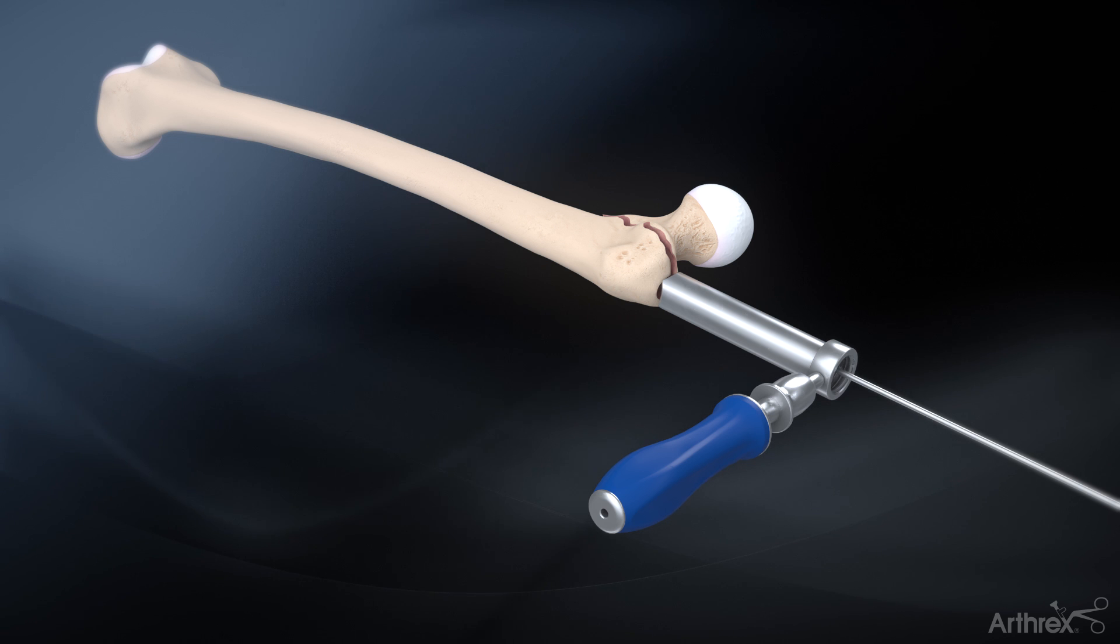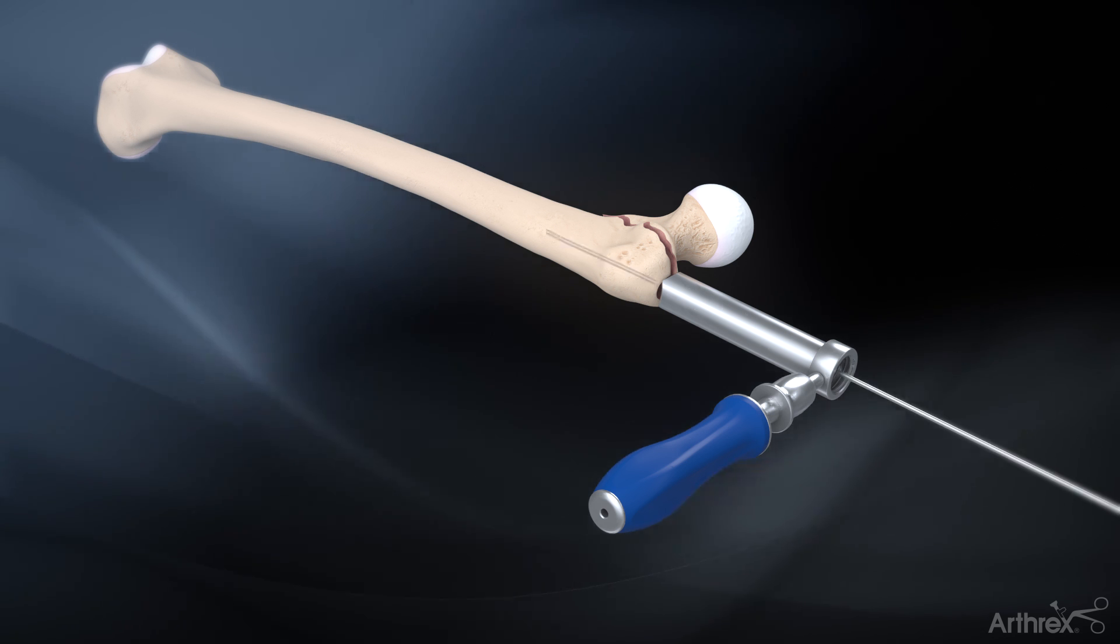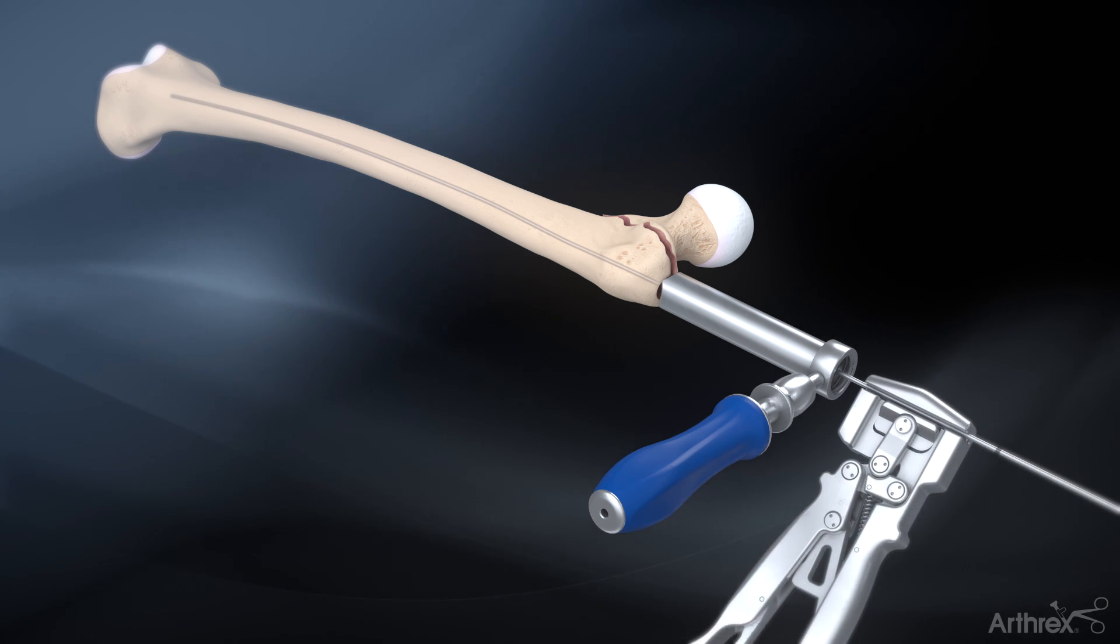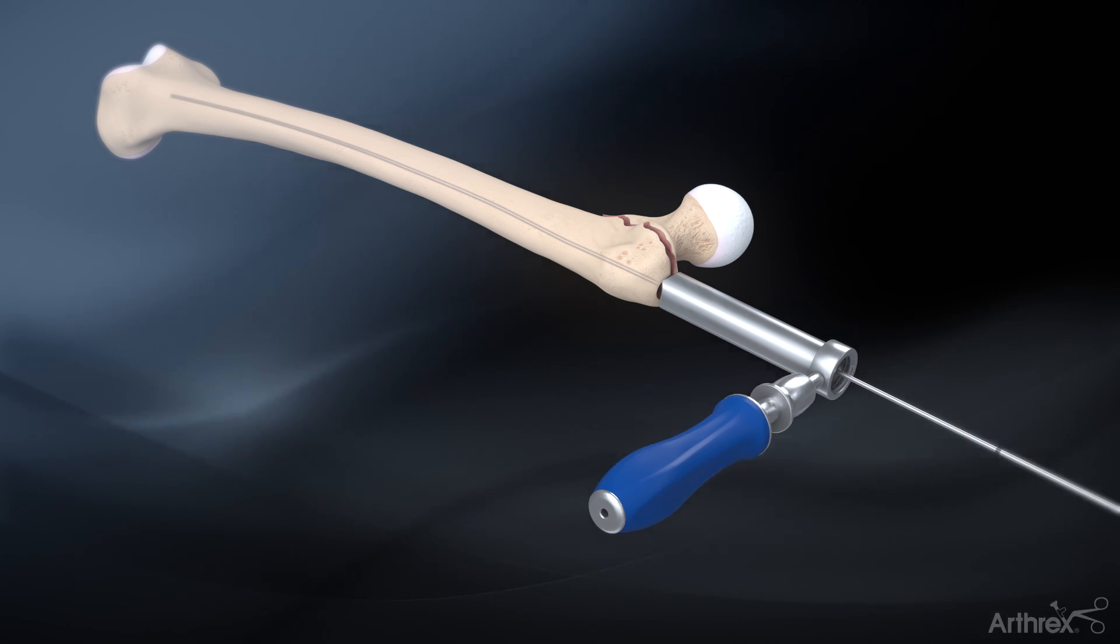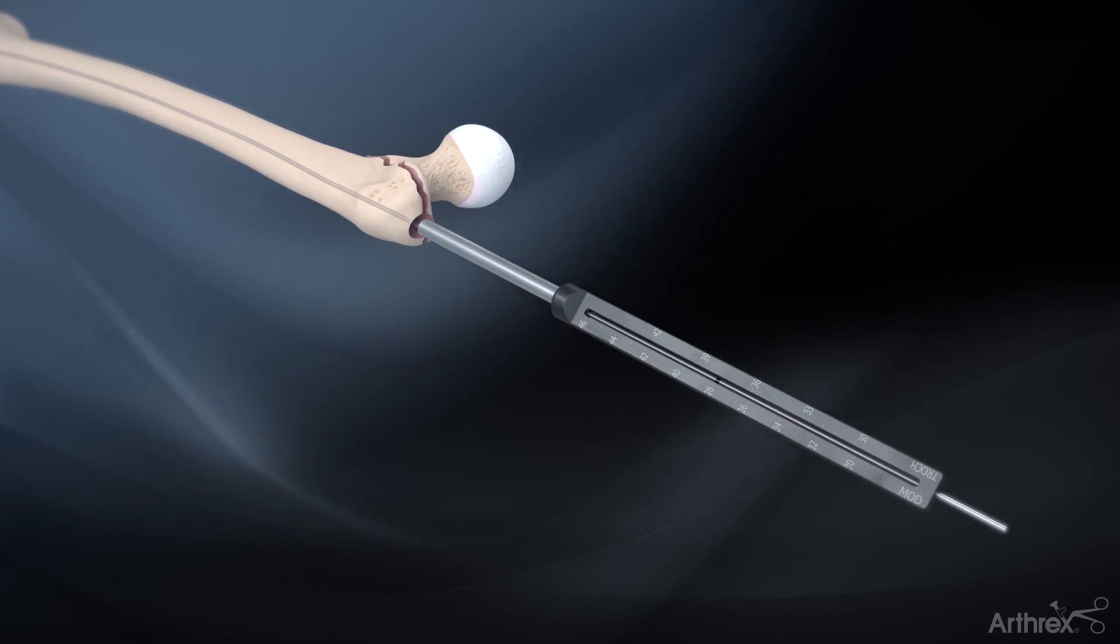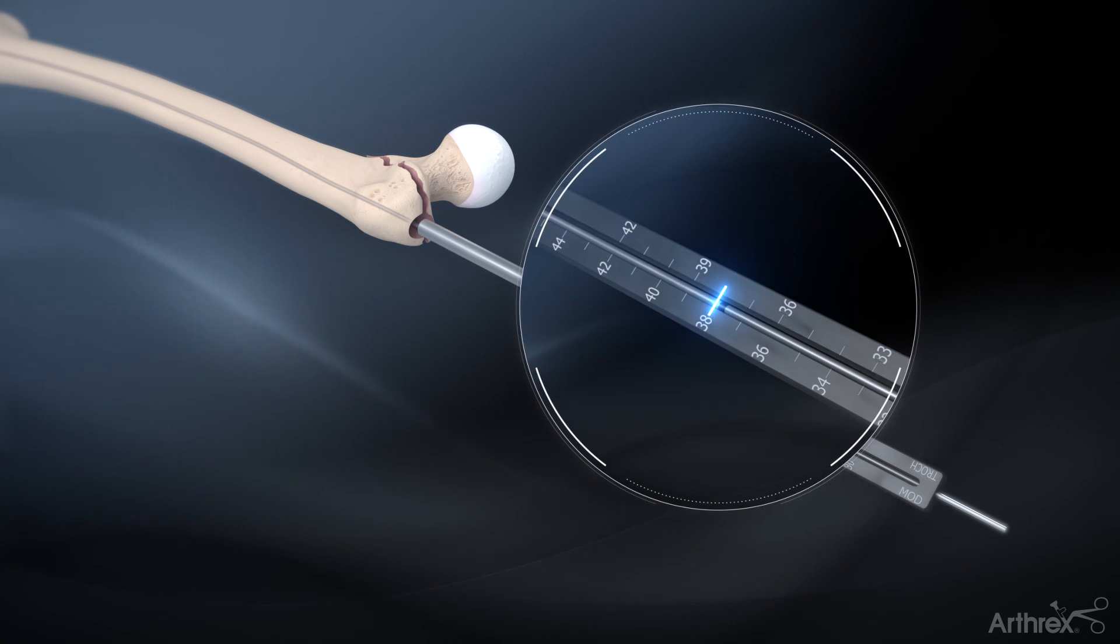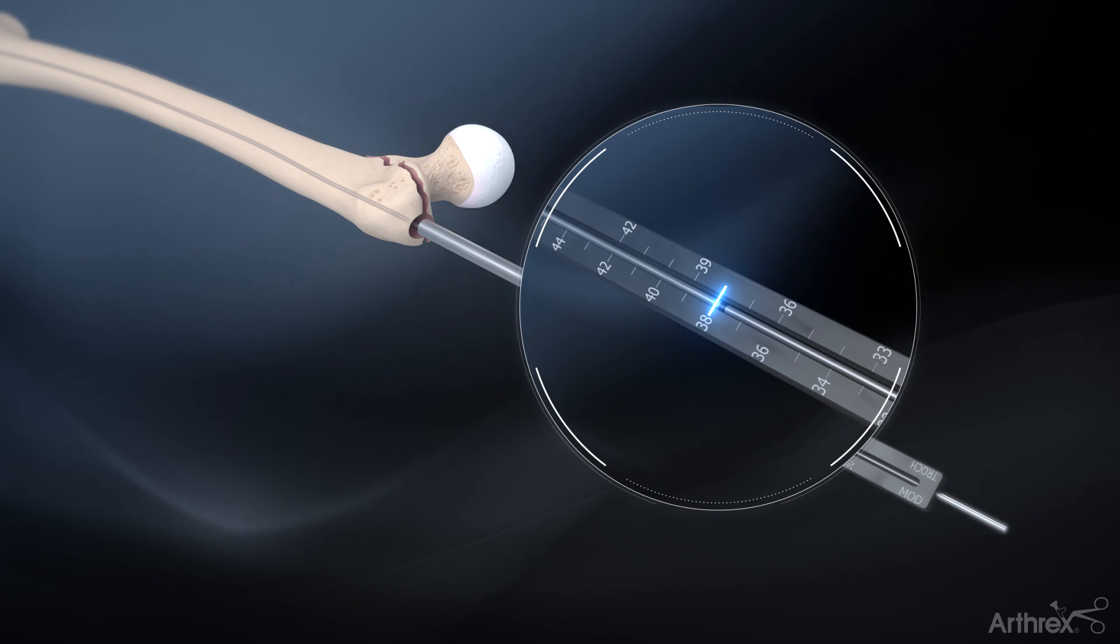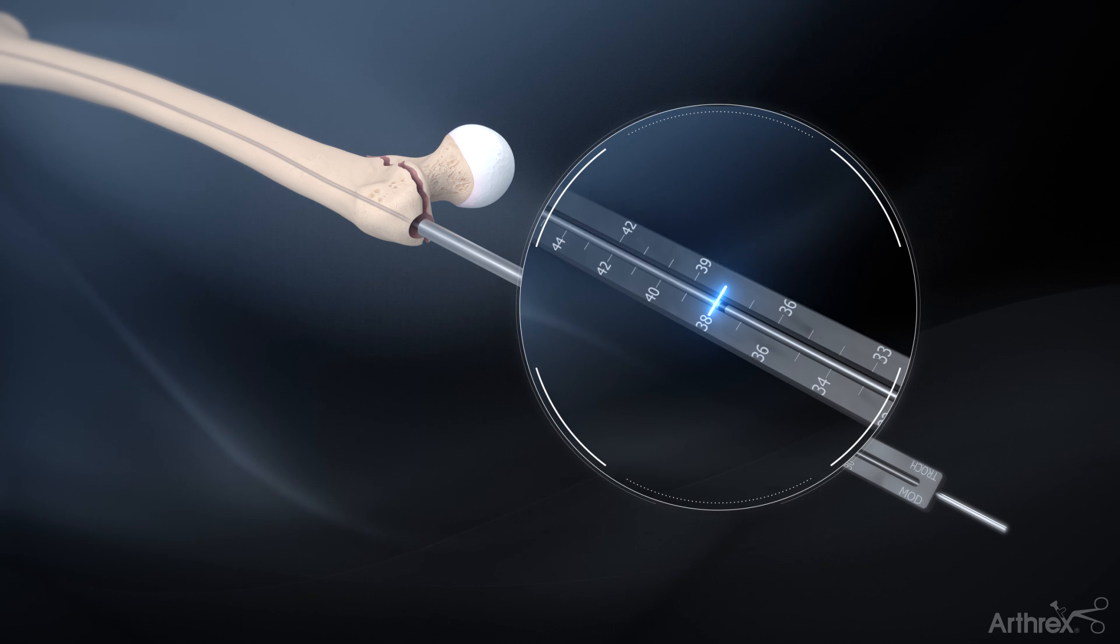The 3.2 mm guide pin is removed and the 3.0 mm ball nose guide wire is introduced down the shaft of the femur using the guide wire gripper. The length for the ES trochanteric nail and long trochanteric nail is determined by sliding the guide wire depth gauge over the guide wire to the greater trochanter and reading the measurement from the laser mark on the guide wire.